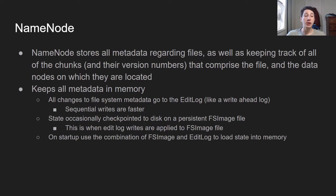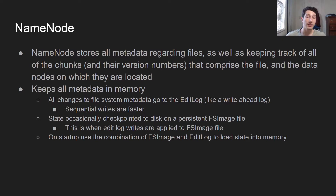The first component of HDFS we have to talk about is probably the most important one — that's going to be called the name node. The name node is where all of the metadata regarding files is stored, so that includes things like names, subdirectories if it is a directory, but more importantly it has to keep track of all the chunks — basically all the data nodes where those chunks are located as well as their corresponding version numbers. You can append or truncate files, and doing so would increment the version number.